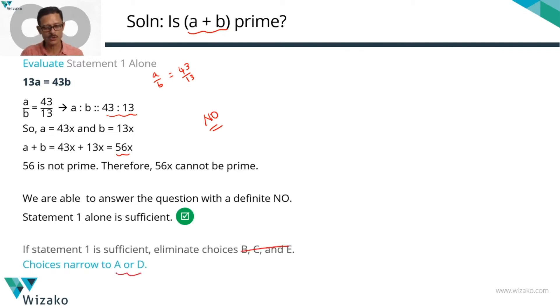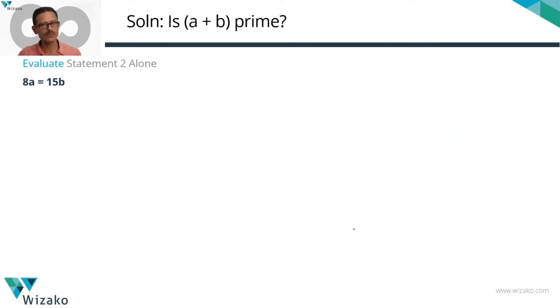To decide whether it's A or D, let's evaluate statement two alone. Statement two tells us that 8a = 15b. Pause the video here - the analysis is exactly the same as the last one. Check if statement two alone will give you a conclusive answer. If it does, go with D. If it does not, go with A. Let's quickly run through it.